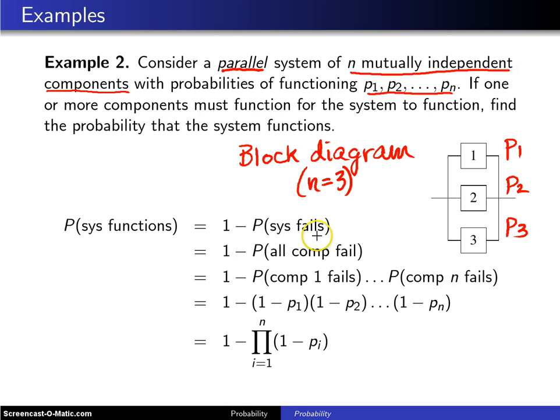The reason for this is in a parallel system, the system fails when all of the components are failed. The way that this system goes down is all three of those have to fail.